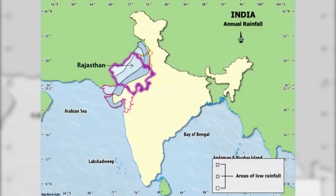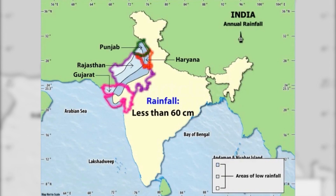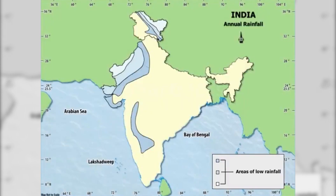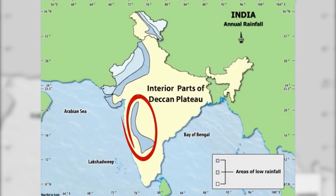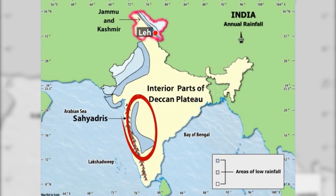Rajasthan and adjoining parts of Gujarat, Haryana and Punjab receive rainfall less than 60 centimetres. Low rainfall is also received in the interior of the Deccan Plateau, east of the Sahyadris, and around Leh in Jammu and Kashmir.